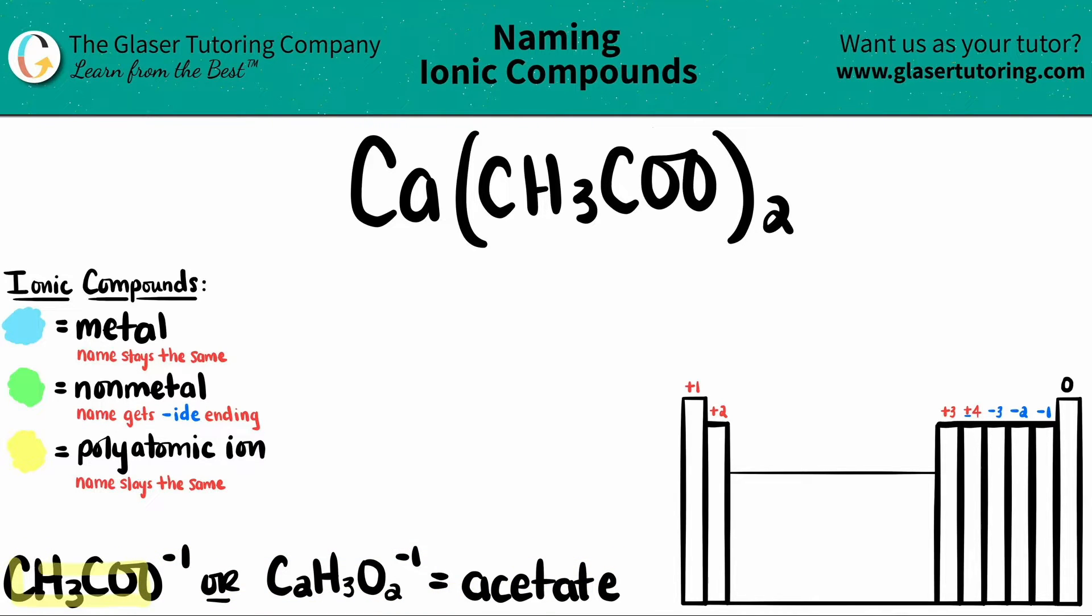In this case, it's shown as CH3COO, but it can also be written as C2H3O2. Both have a negative one charge, which you should memorize. This polyatomic is called acetate.